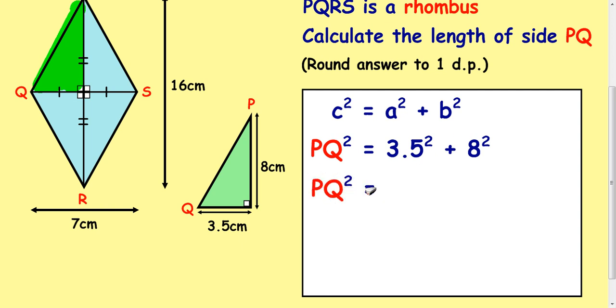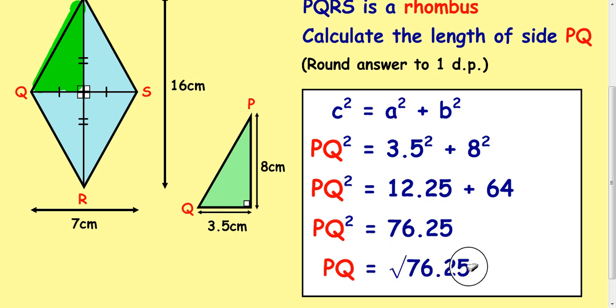PQ squared is equal to, put that into your calculator and get this coming out, 12.25 and 64. Add them together to get 76.25. And then finally to get PQ, which was the question, you square root 76.25 and you get 8.7. What I would advise you to do is get your unrounded answer and then write your rounded answer underneath.